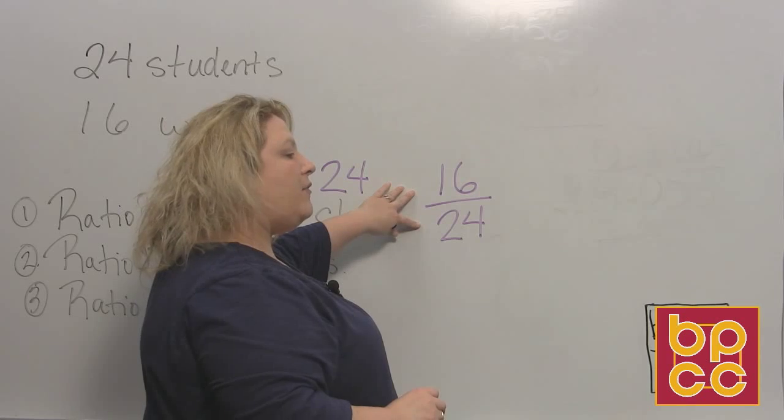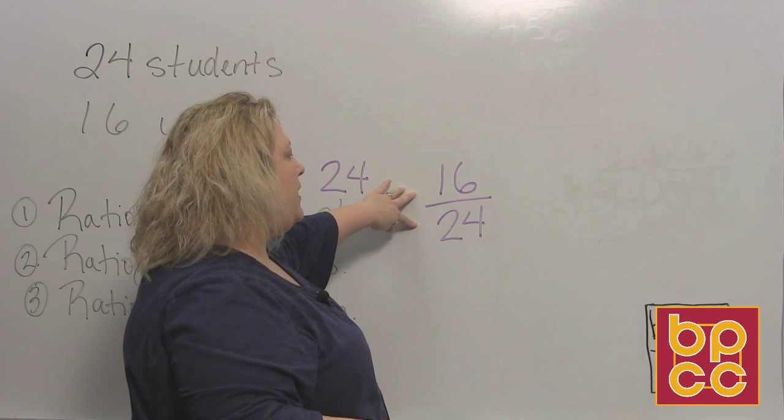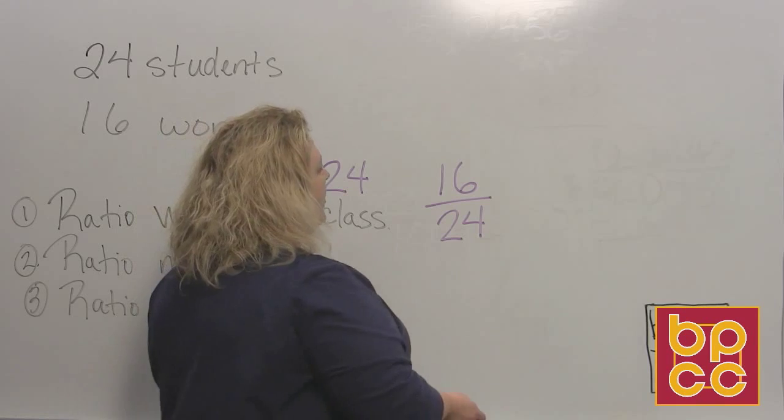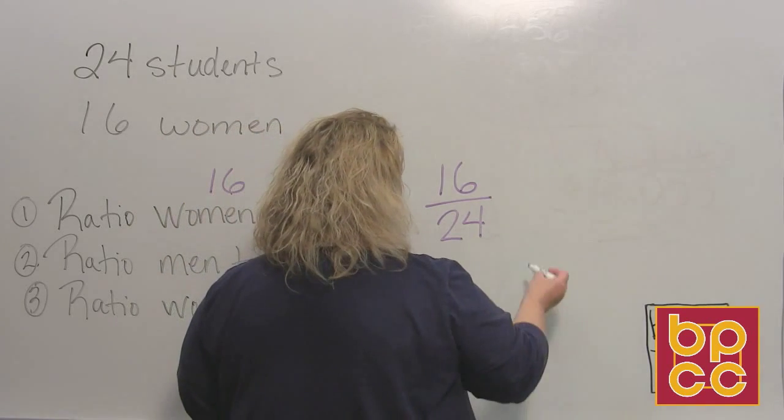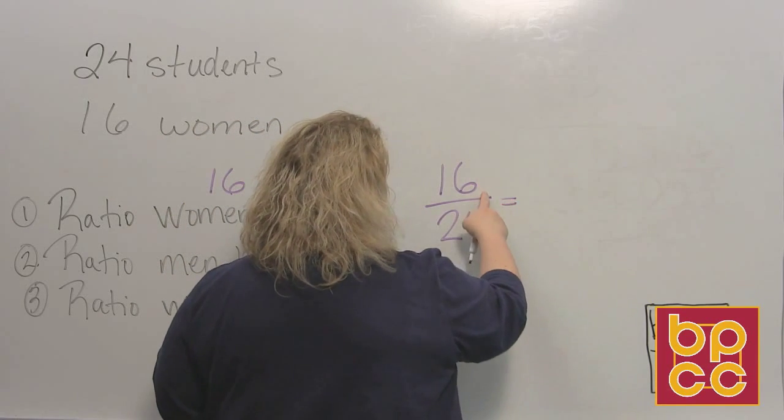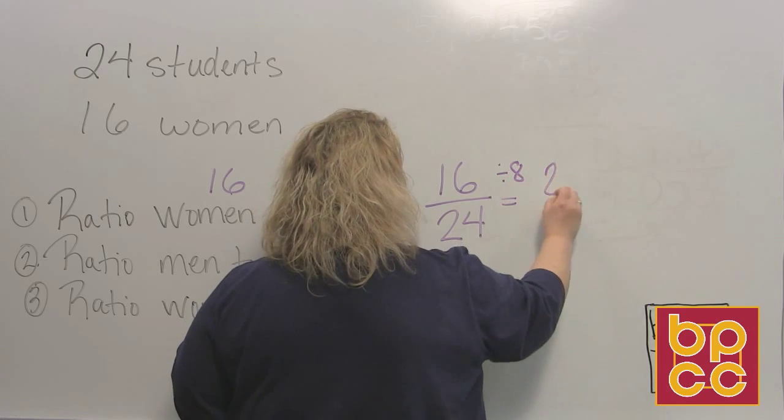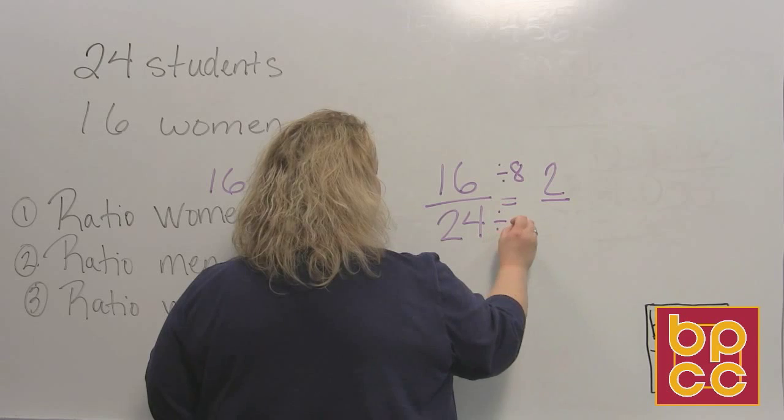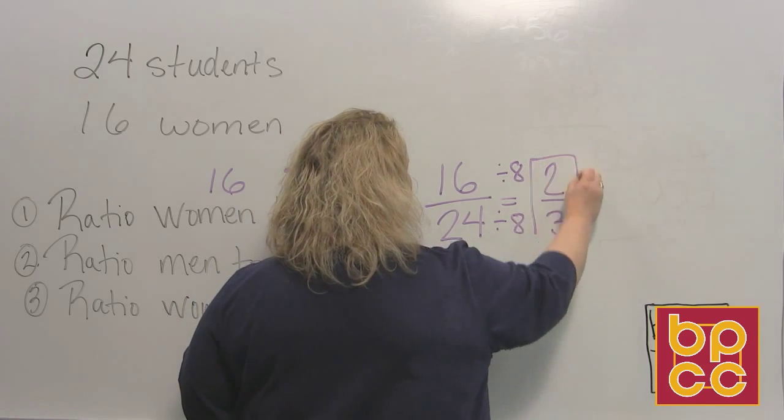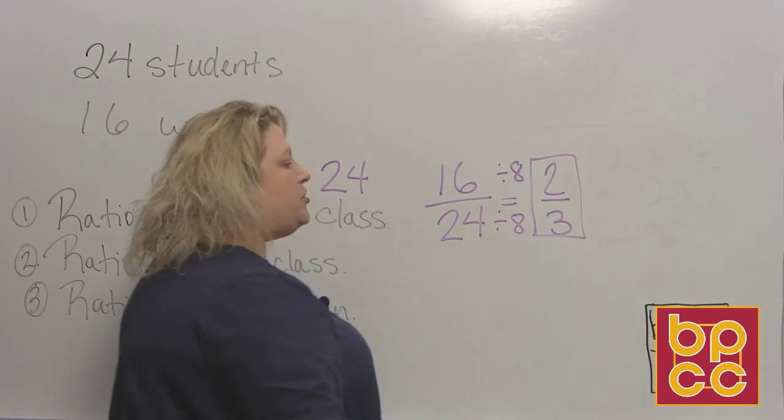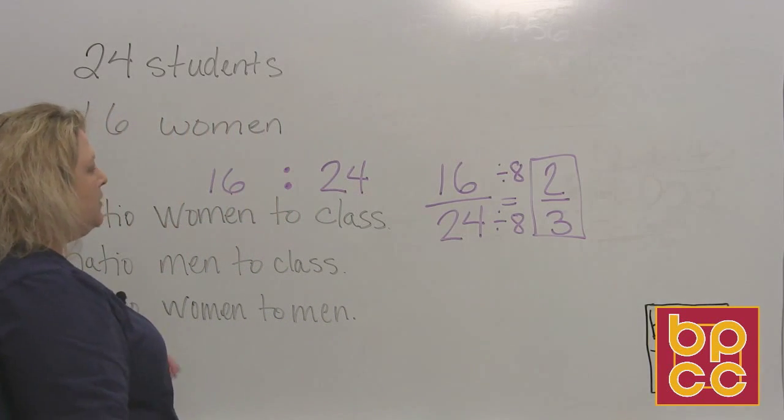Now every time you do a ratio it's like a fraction so you want to write it in reduced form. So both of these can be divided by the number 8. So if I divide 8 into 16, I get 2. And if I divide 8 into 24, I get 3. So the reduced ratio is 2 to 3.